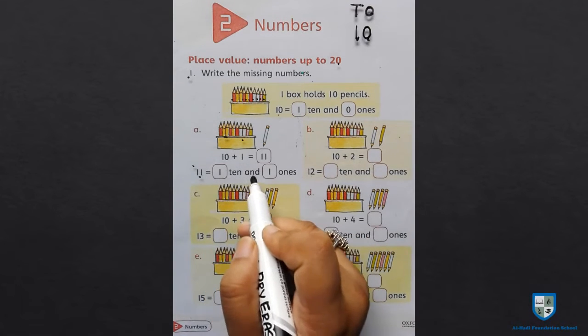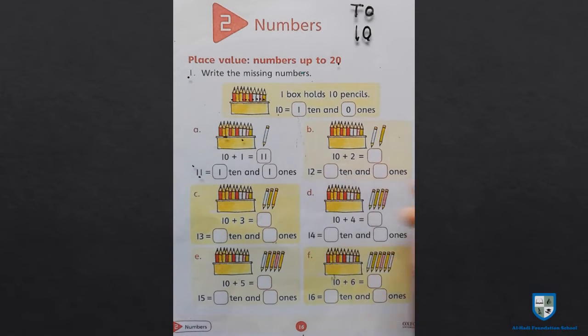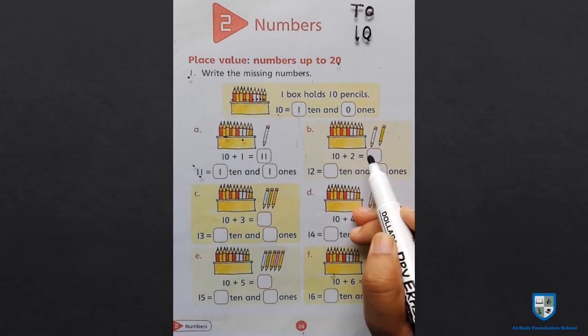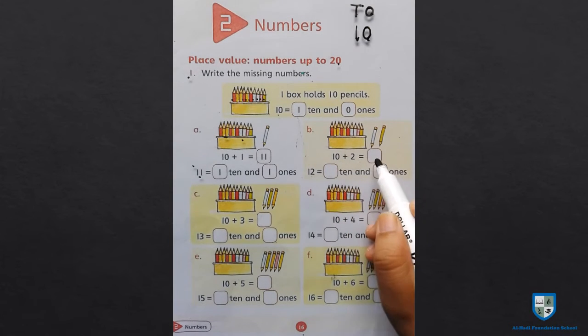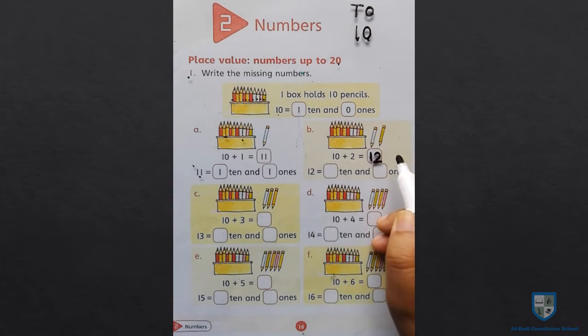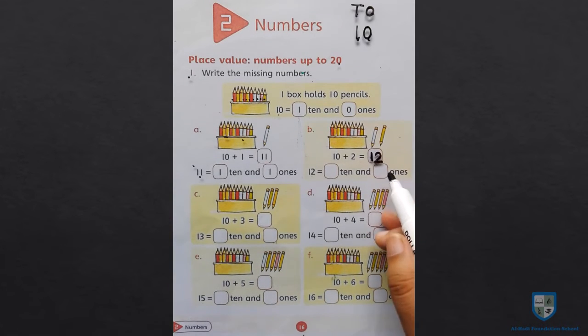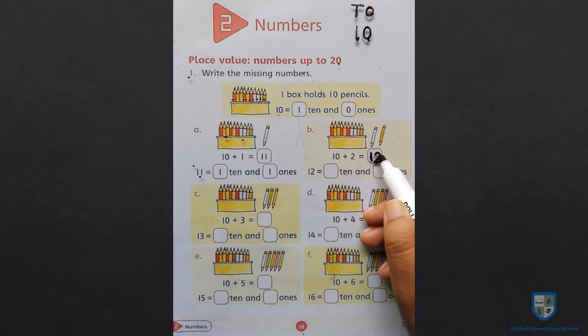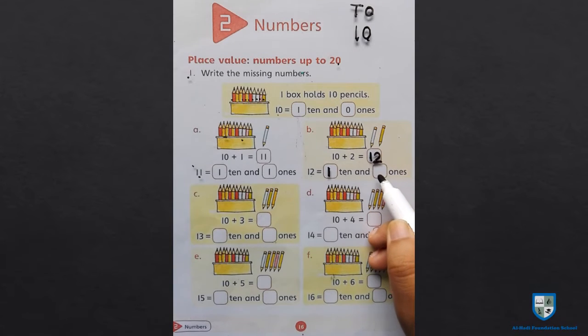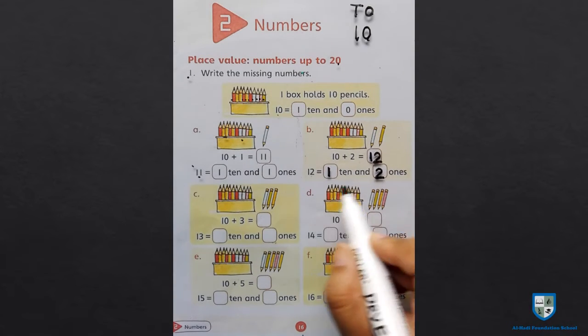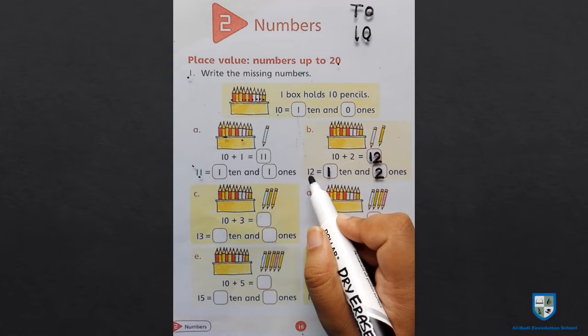Next B: 10 plus 2. 10 में हमने 2 पैंसिल प्लास करनी है. 10 plus 2 is equal to 12. 12 में देखेंगे 10s क्या है और 1s क्या है. First number is 1 and second is 2. 1 ten and 2 ones is equal to 12.